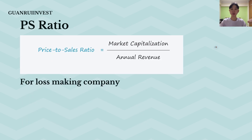The next valuation method is price-to-sales. You take the market cap of the company and divide it by the annual sales. This is normally used for companies that are not profitable yet. People use this valuation to justify high valuations for highly speculative stocks, and that's why I usually avoid this metric.